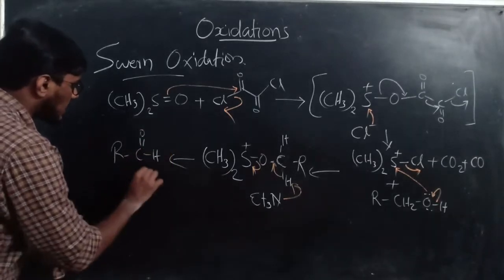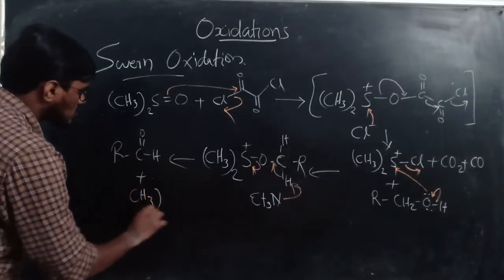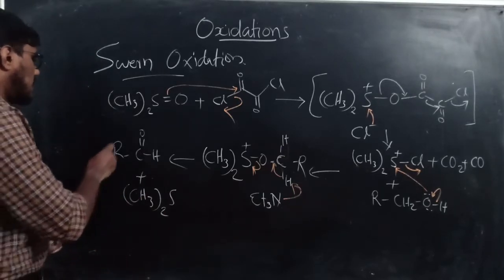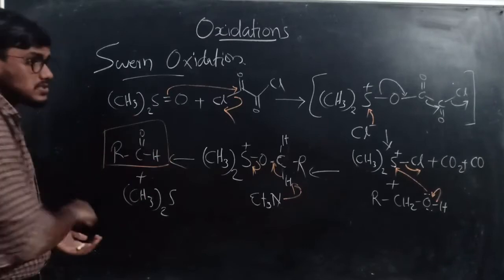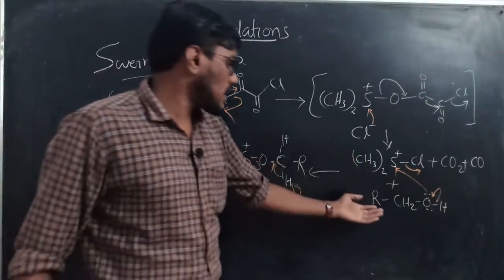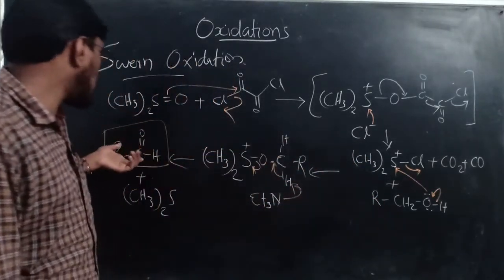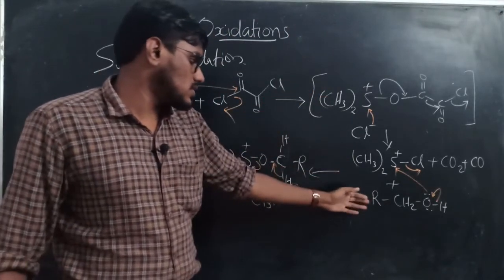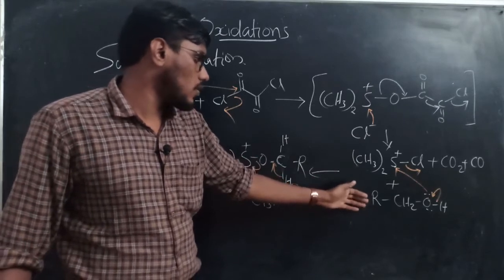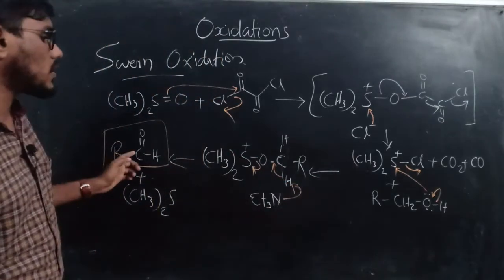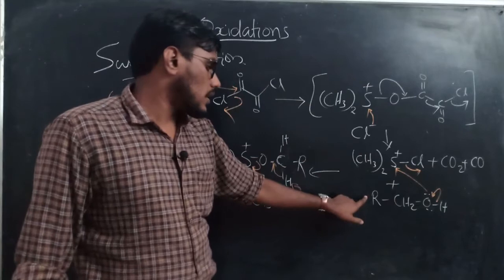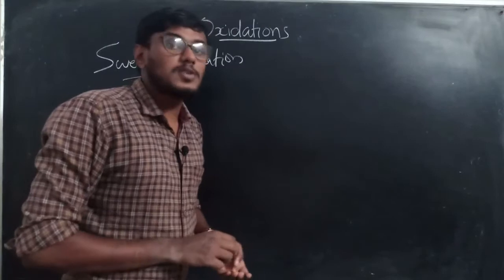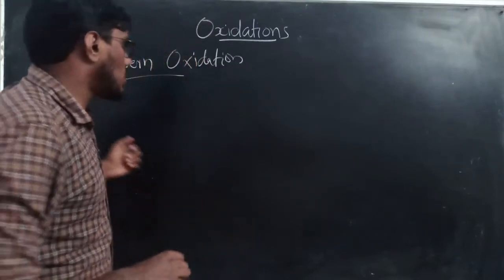The bond cleavage gives the aldehyde R–CHO plus dimethyl sulfide (CH₃)₂S as products. If a primary alcohol is used, the product is an aldehyde; if a secondary alcohol is used, the product is a ketone.